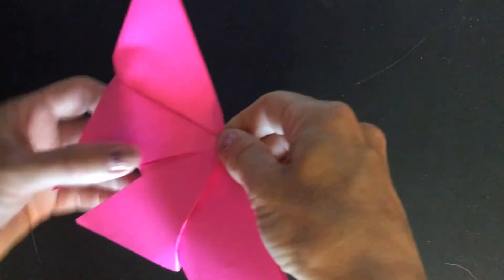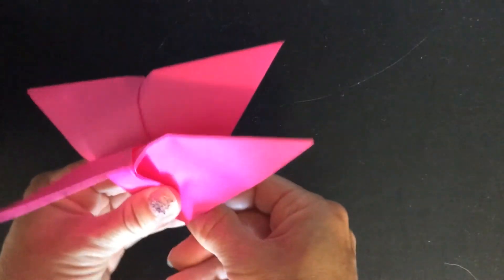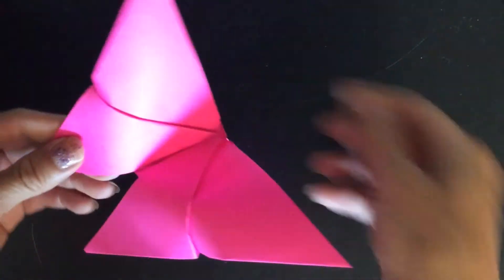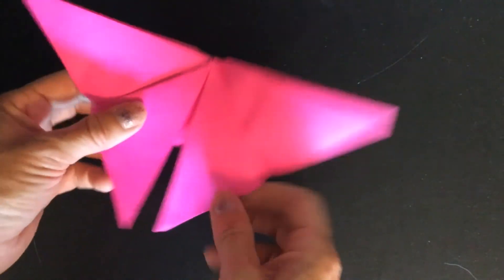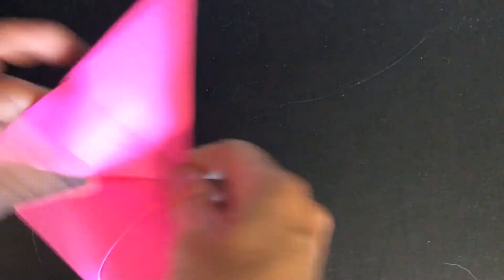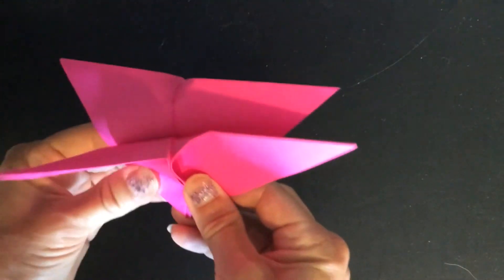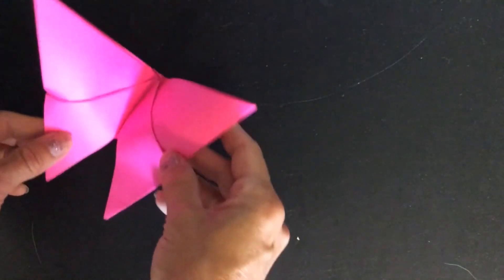That's your butterfly's head. And then you can fold the whole thing in half a little bit to get your crease. So it looks a little bit more like a butterfly.